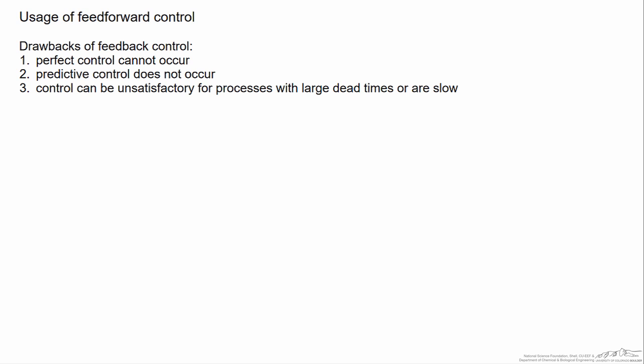Because you are only measuring the controlled variable at the end of the process, there is no way to predict what is going to happen to this variable. An additional problem is that processes are slow or have large dead times, which can lead to control that will take a while. If a system has a very large dead time, the disturbance will occur, the process won't feel it for a while, but once it feels it, it will take a while to actually act on it because of the slowness of the process. So feedforward control is a way to handle all three of these drawbacks.